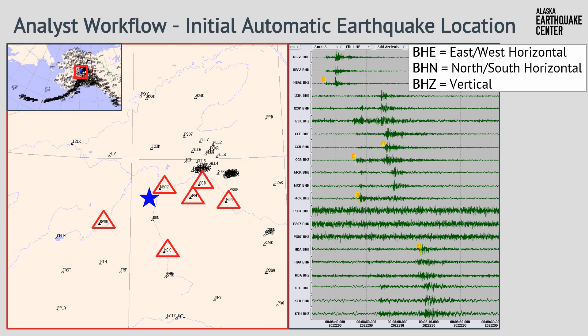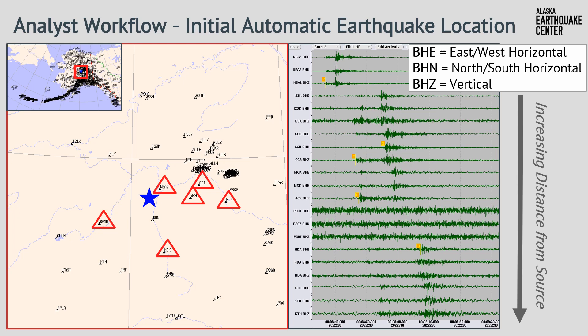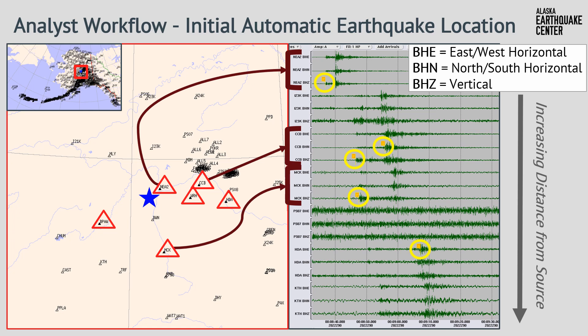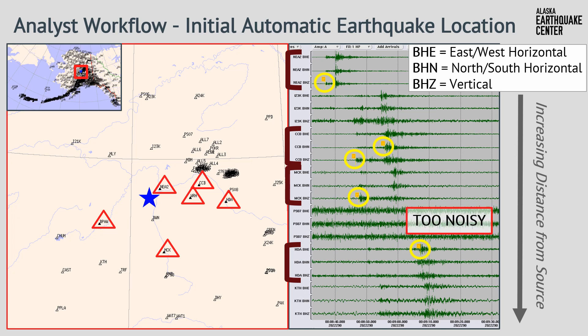We notice that the earthquake arrives later and later, indicating that these stations are arranged with the station closest to the epicenter at the top, and increasing distance as you move down through the data. Additionally, we can see that there are some P and S wave arrivals already provided by the automatic solution. Looking at the stations that have automatic data, we can pick out where they are on the map. The fifth station on our waveform view doesn't show the earthquake signal above the background noise, meaning that station is too noisy to use in our location.